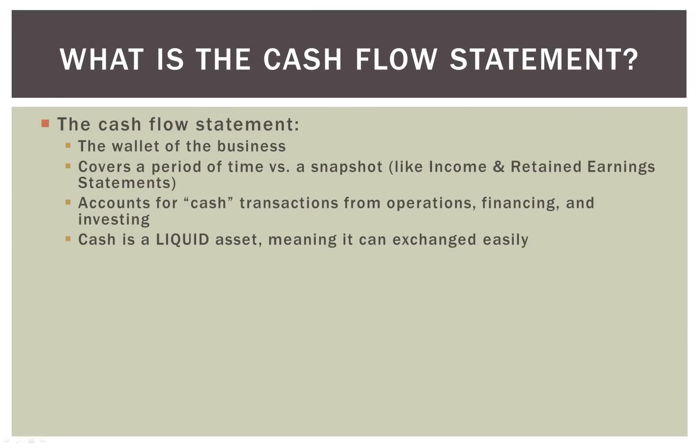Well, you can kind of think of it as the wallet of the business. If you open up your wallet, hopefully there's a little bit of money in there — the cash flow statement keeps track of the cash that goes in and out of that wallet. The cash flow statement covers a period of time versus a snapshot. The balance sheet is a snapshot in time, while the cash flow statement, the income statement, and the retained earnings statement all cover a period of time — most commonly a quarter or a year.